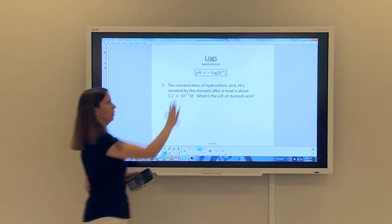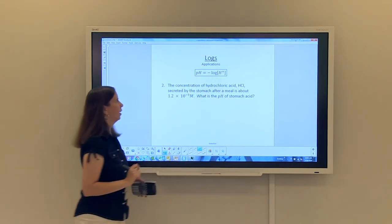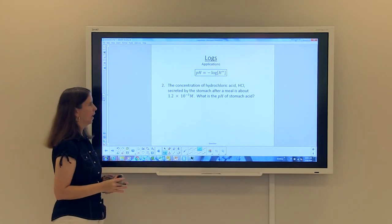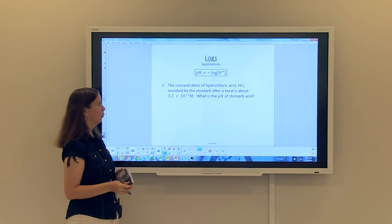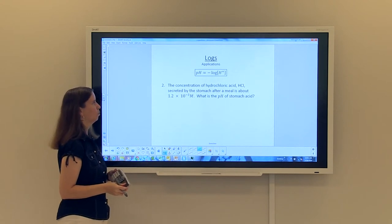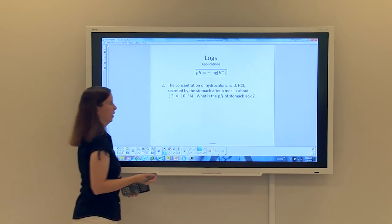Let's try one more. So still using the same formula. The concentration of hydrochloric acid, HCl, secreted by the stomach after a meal is about 1.2 times 10 to the negative 3 molars. What is the pH of stomach acid? So again,